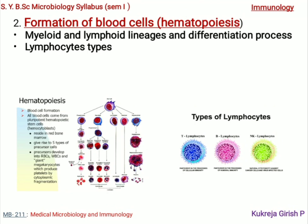Then we will talk about the real players of the immune system — the blood cells. We will study the process of formation of these immune cells through hematopoiesis, with an overview of the myeloid and lymphoid lineages, the differentiation process, and the various types of lymphocytes which are the real players of our immune system.